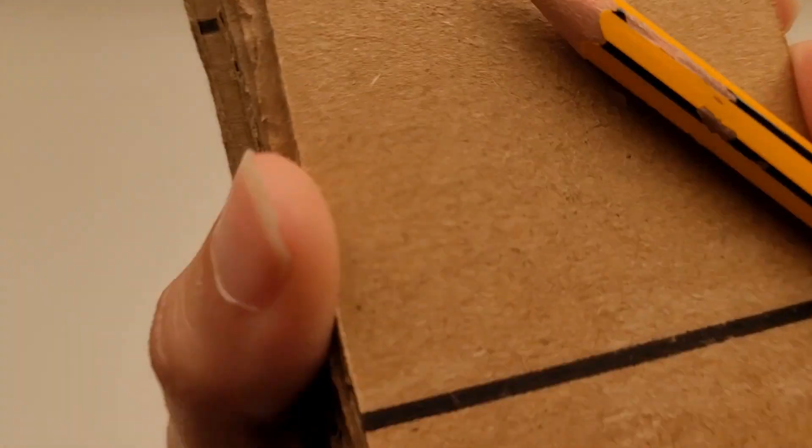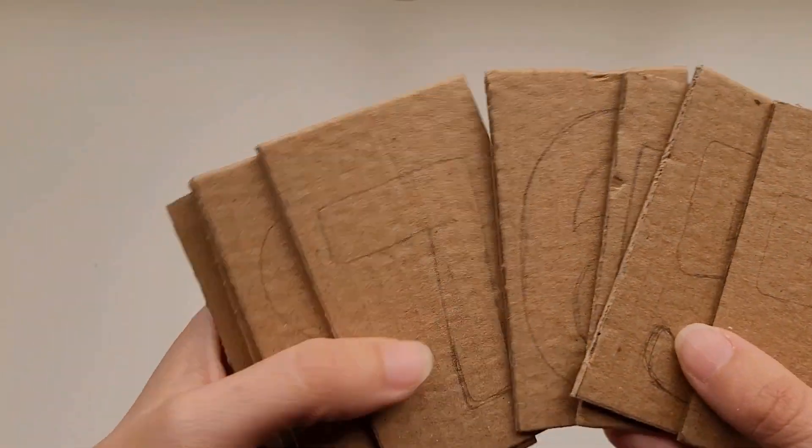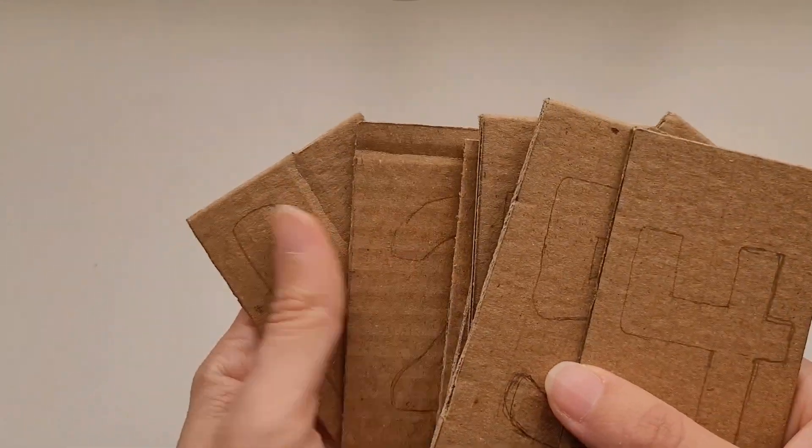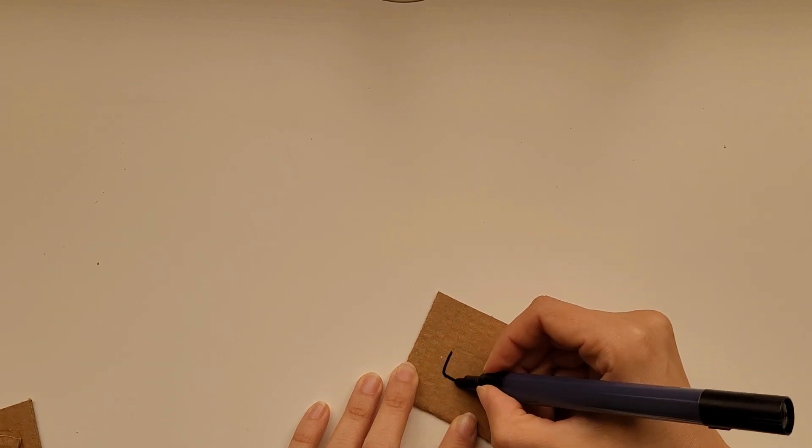We start out by cutting some little rectangles. Then we're going to write the numbers on each rectangle. After that, we can use a marker and outline each number.